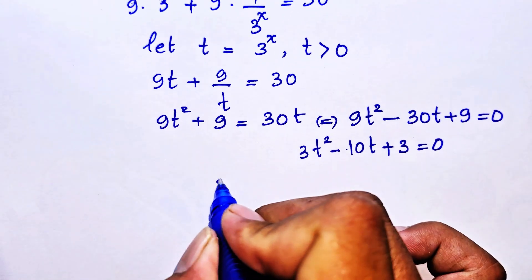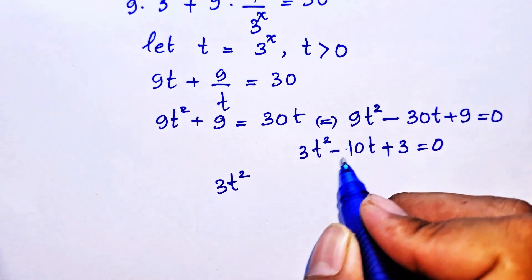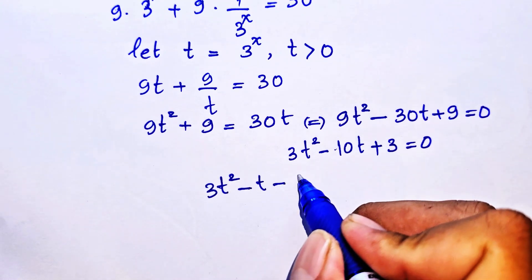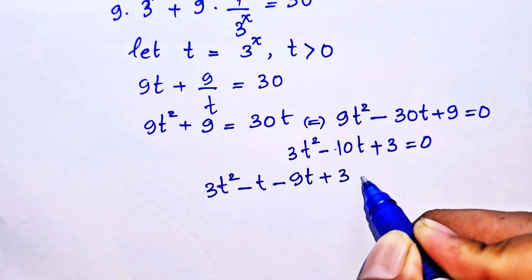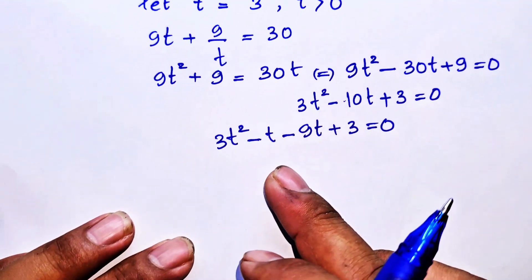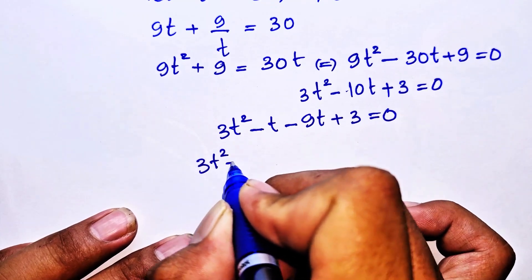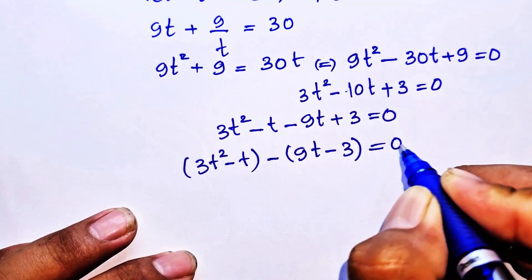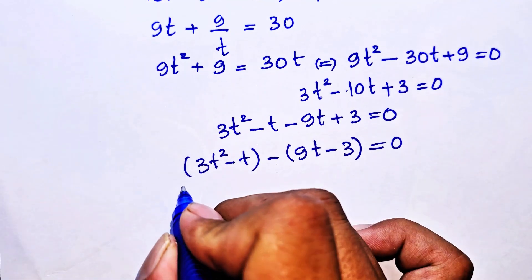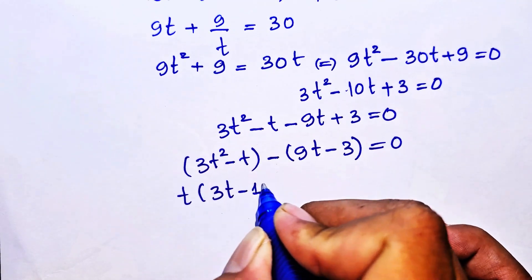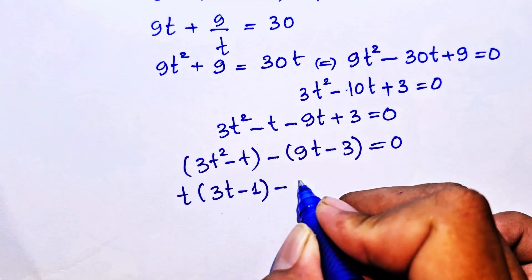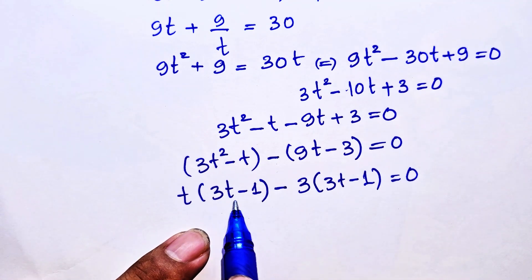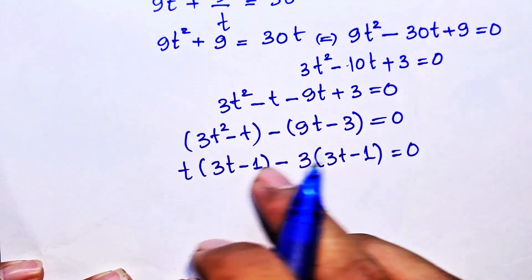We factor 3t² − 10t + 3 = 0 by splitting the middle term: 3t² − t − 9t + 3 = 0. We take t out of the first two terms to get t(3t − 1), and take 3 out of the last two terms to get 3(3t − 1). Since (3t − 1) is common, we factor it out.